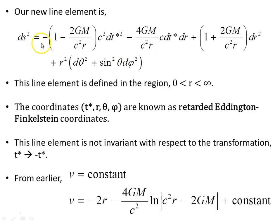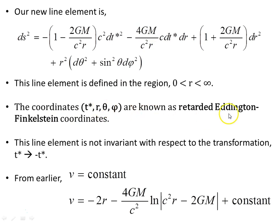Our new line element in retarded Eddington-Finkelstein coordinates is this object here. It is defined in the region r greater than 0 to infinity — the Schwarzschild singularity at 2GM on c squared is gone. Notice also this line element is not invariant with respect to a time reversal: replacing t* with minus t* gives a different value.